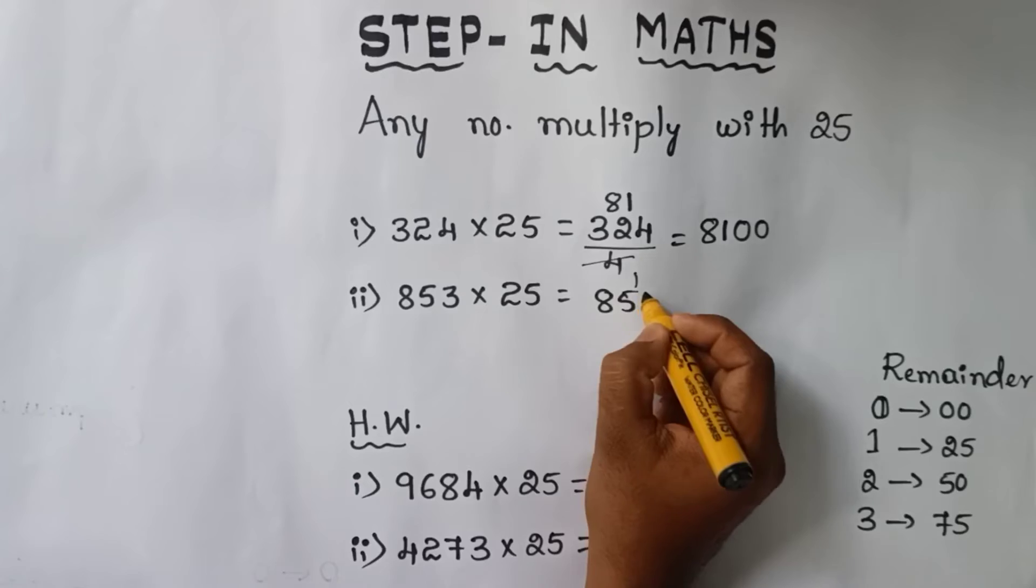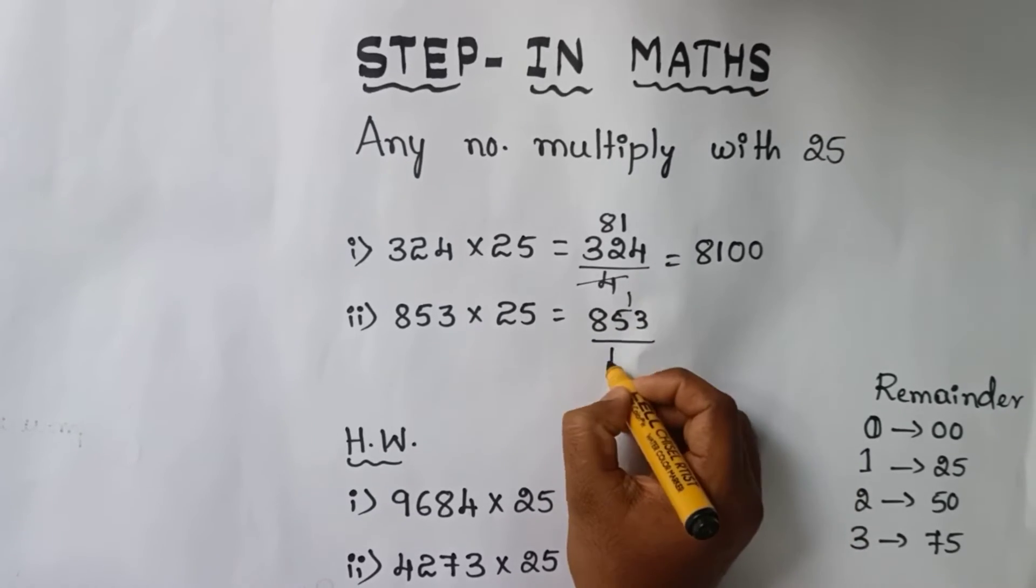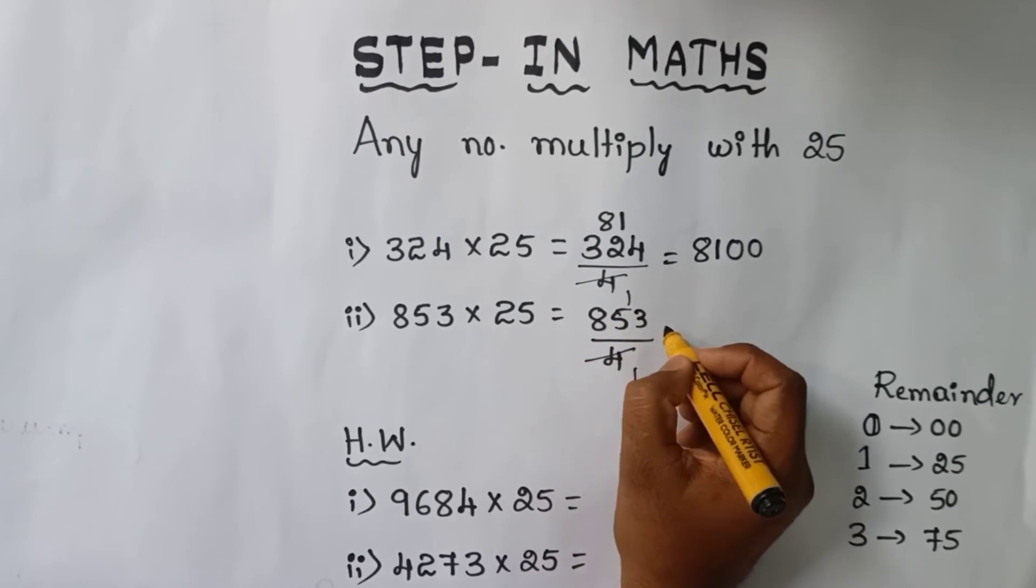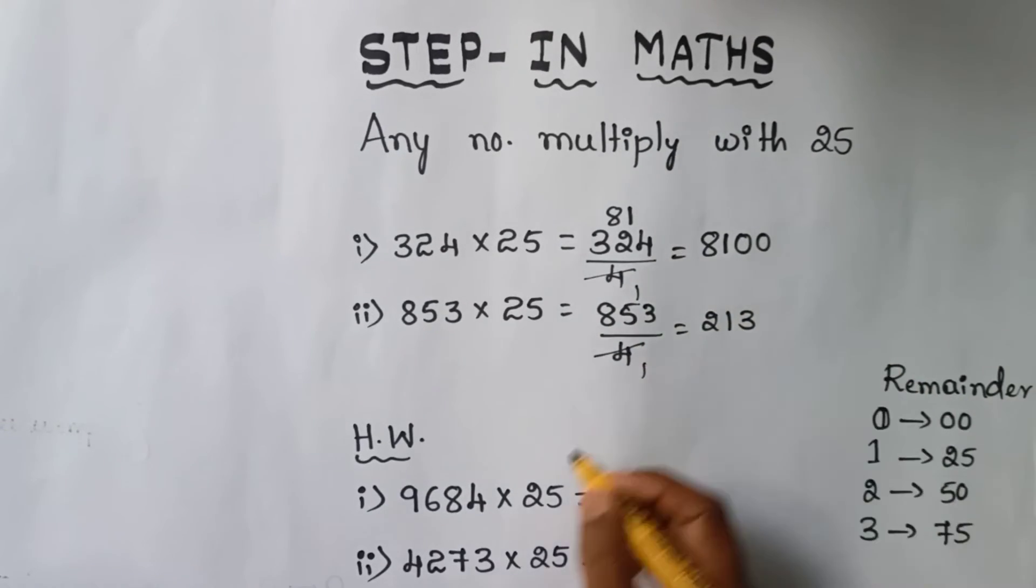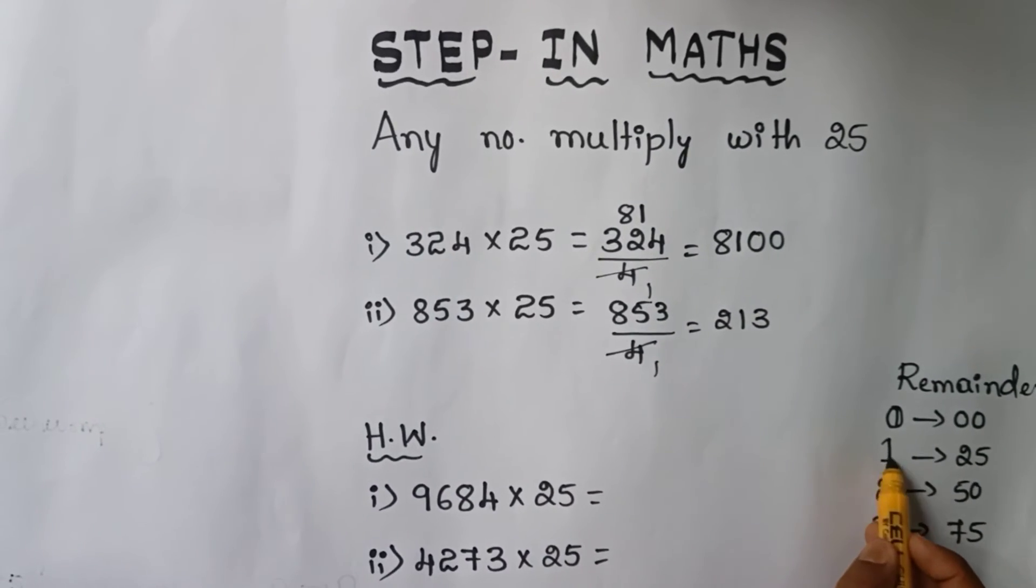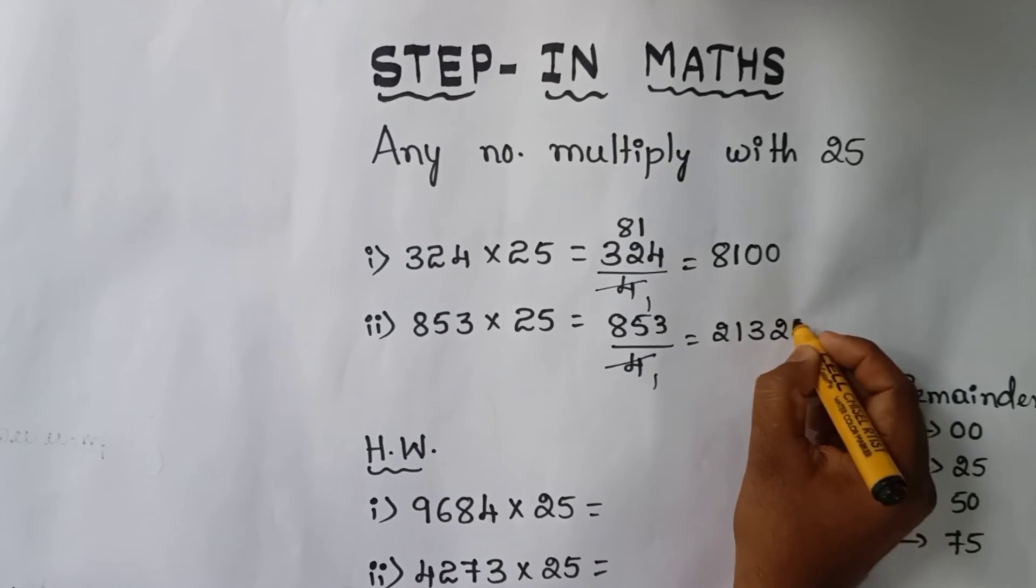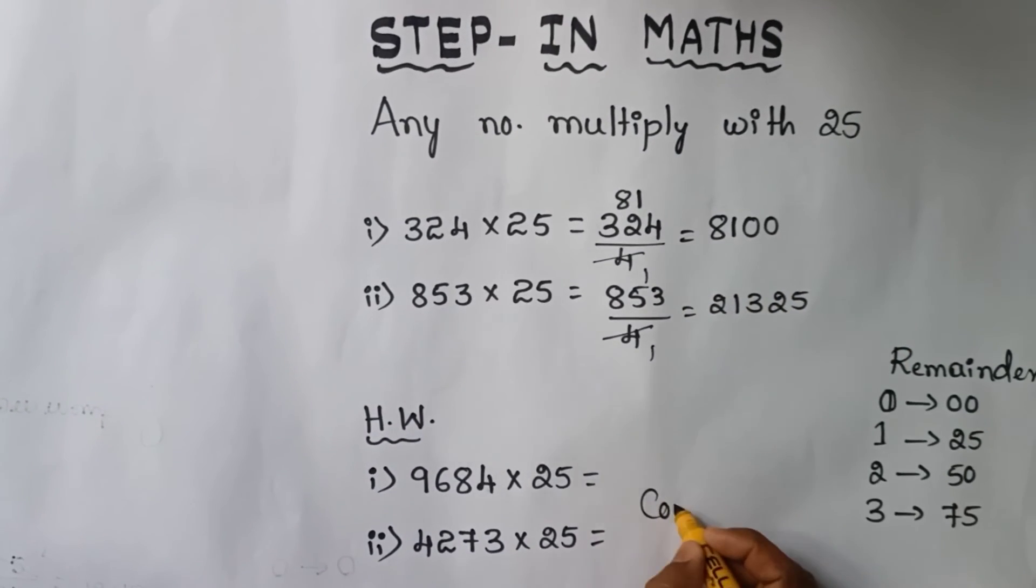Now, 853 into 25 means 853 divided by 4. 4 ones are 4, 2 is 8, 4 ones are 4, 4 threes are 12. What is the remainder here? Remainder is 1. So, what we need to write? 25.